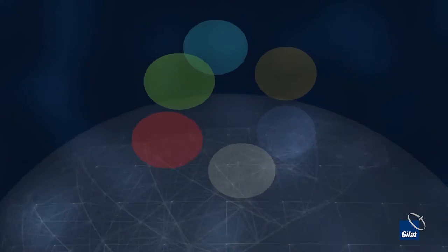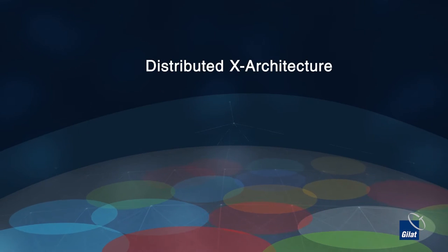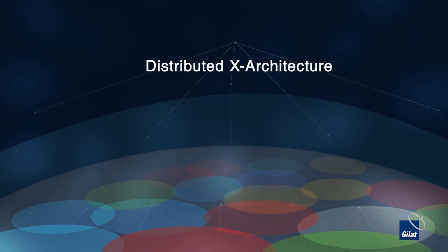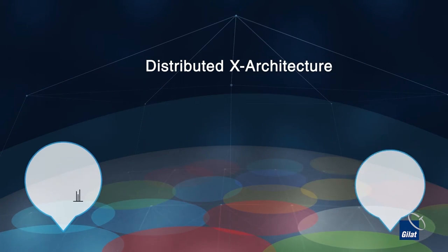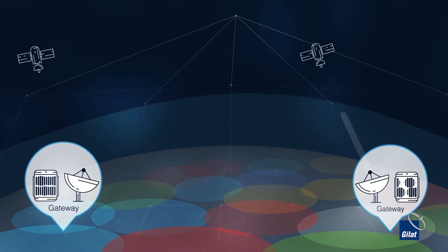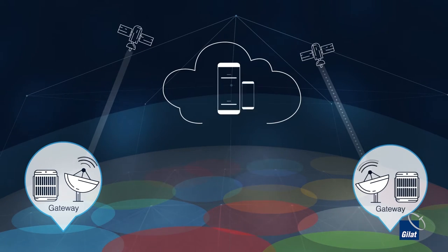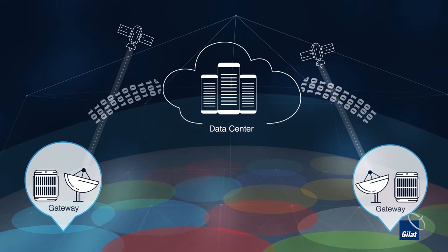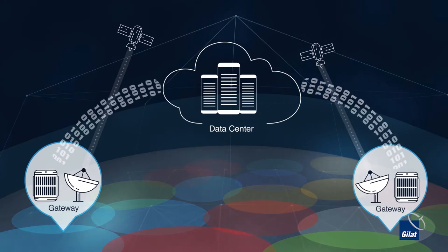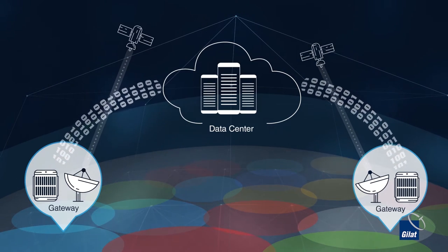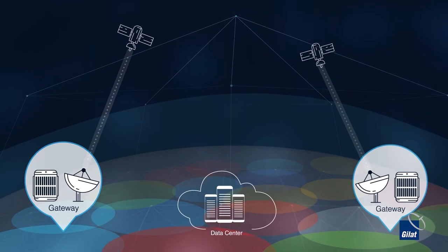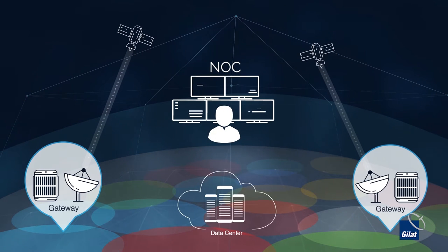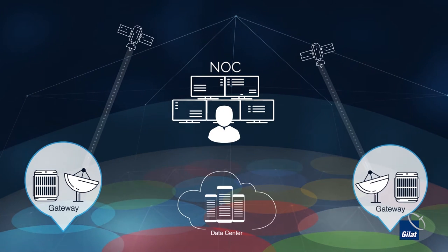Our distributed architecture is optimized for high-throughput satellites and maximizes flexibility. Your gateways can be located anywhere in the world, while your satellite data processing can take place at a separate, cloud-based data center. The network is easily controlled by a single global network management system — Gilat's Total NMS.